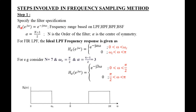Step 1: Specify the frequency response characteristics HD(e^jω), which contains both magnitude and phase. It is given as e^(−jαω). For a low-pass filter, HD(e^jω) equals e^(−jαω) for ω from 0 to ωc, where ωc is the cutoff frequency. Here, α = (N−1)/2, where α is called the center of symmetry for symmetrical FIR filters.